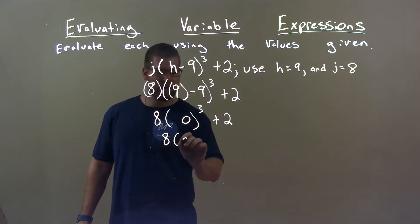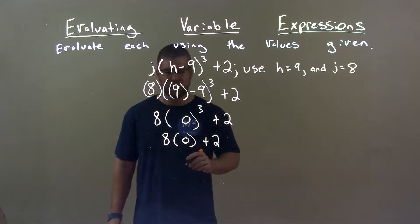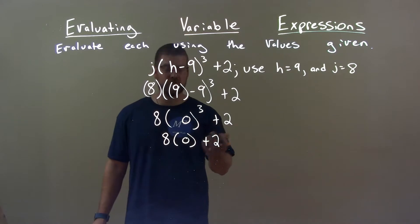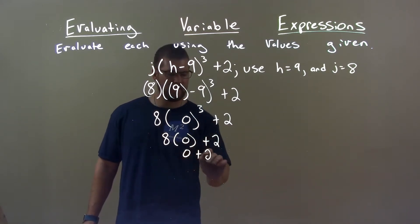We have 8 times 0 here plus 2. 8 times 0 is just 0. Any number times 0 is 0.